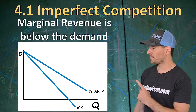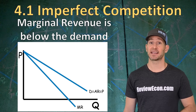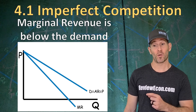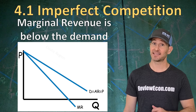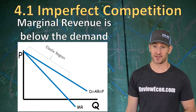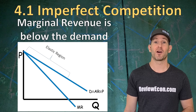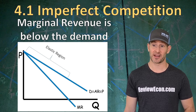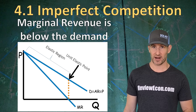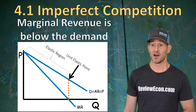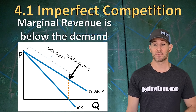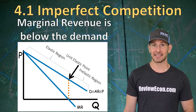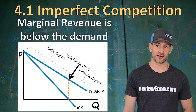As you've learned before, that marginal revenue curve gives us an indication of the elasticity of the demand curve above. Where the marginal revenue is positive, that's the elastic range of the demand curve. Where that marginal revenue curve intersects the axis, marginal revenue is zero — that's the unit elastic point on the demand curve above. Once the marginal revenue drops below the axis and becomes negative, that is the inelastic region on that demand curve.